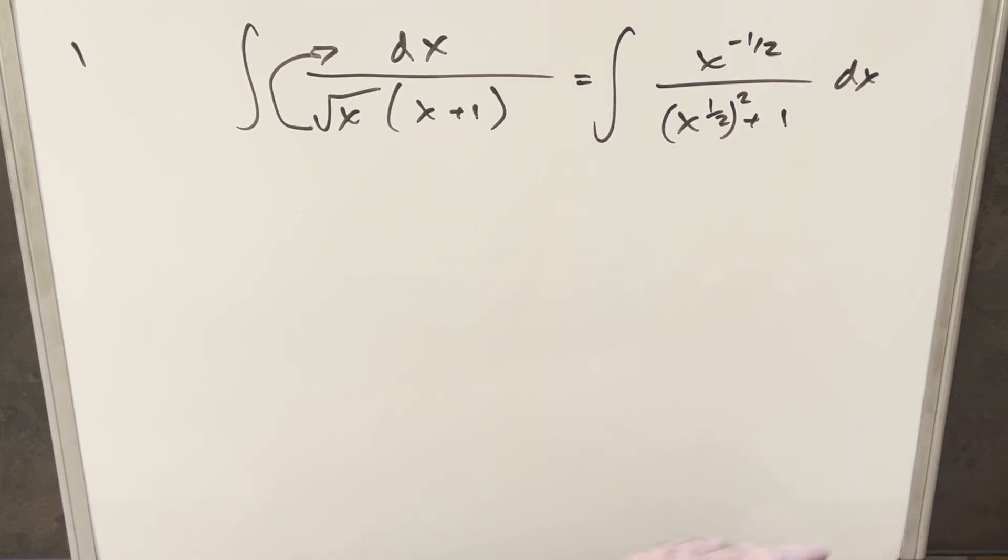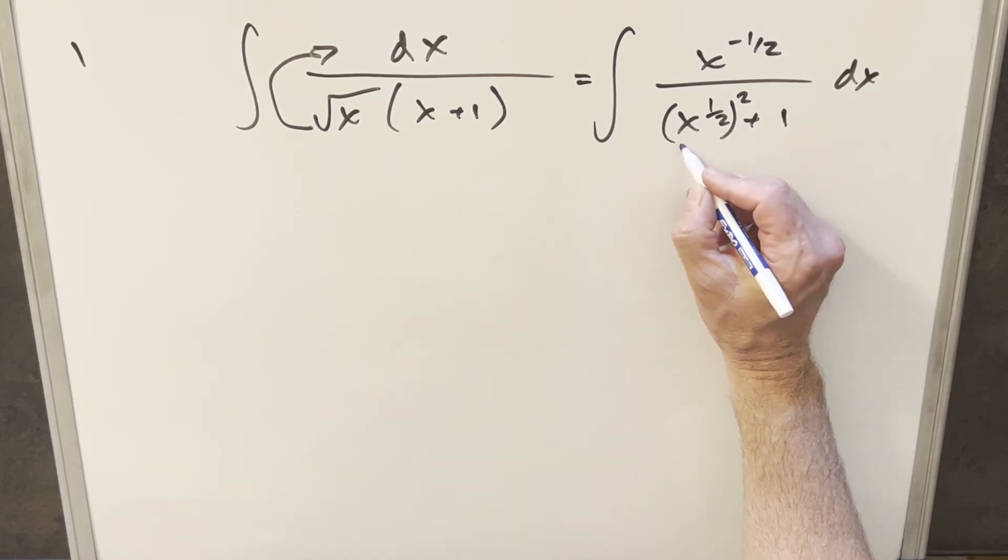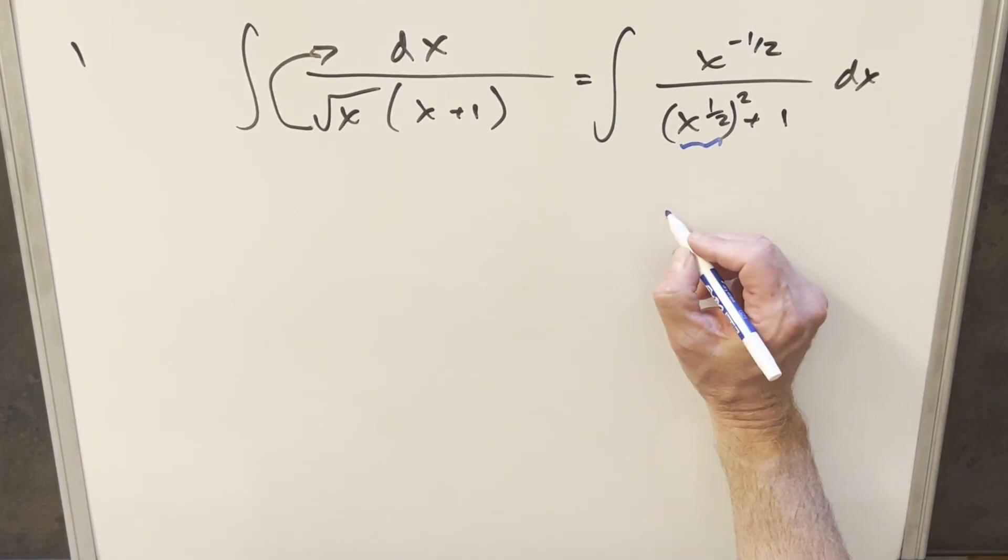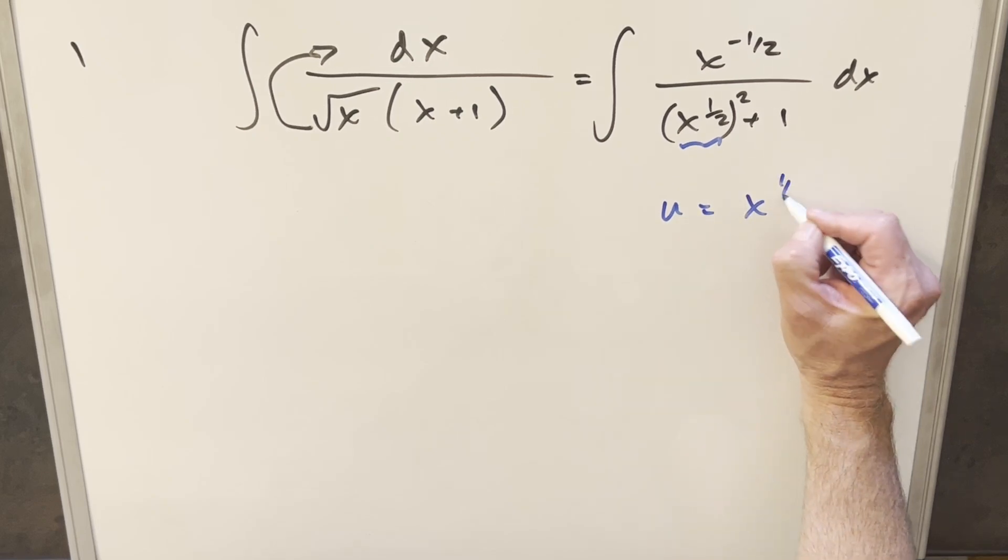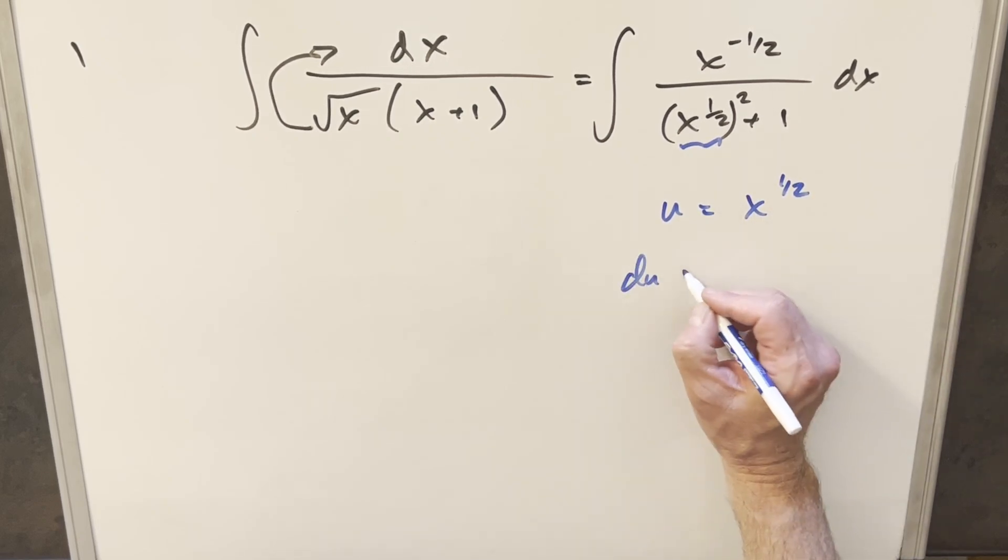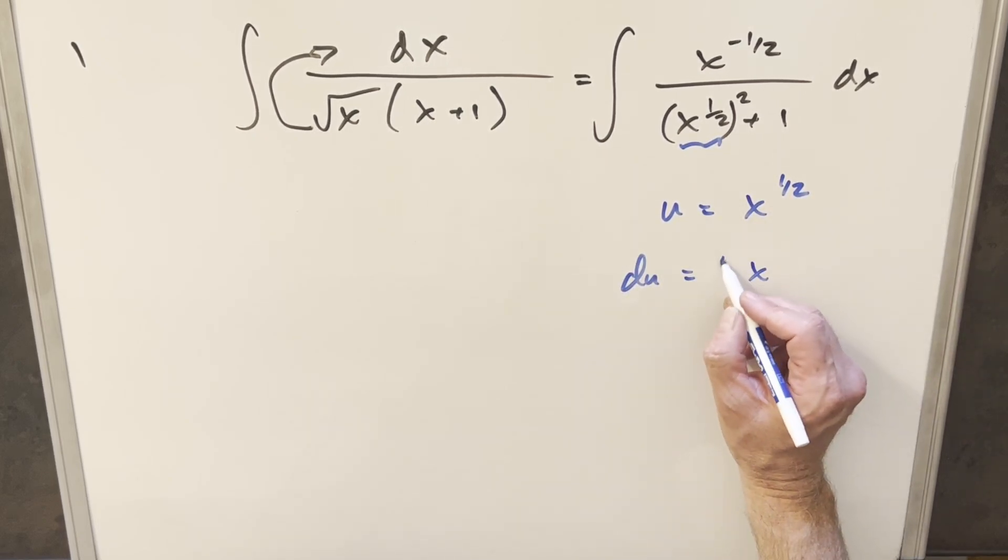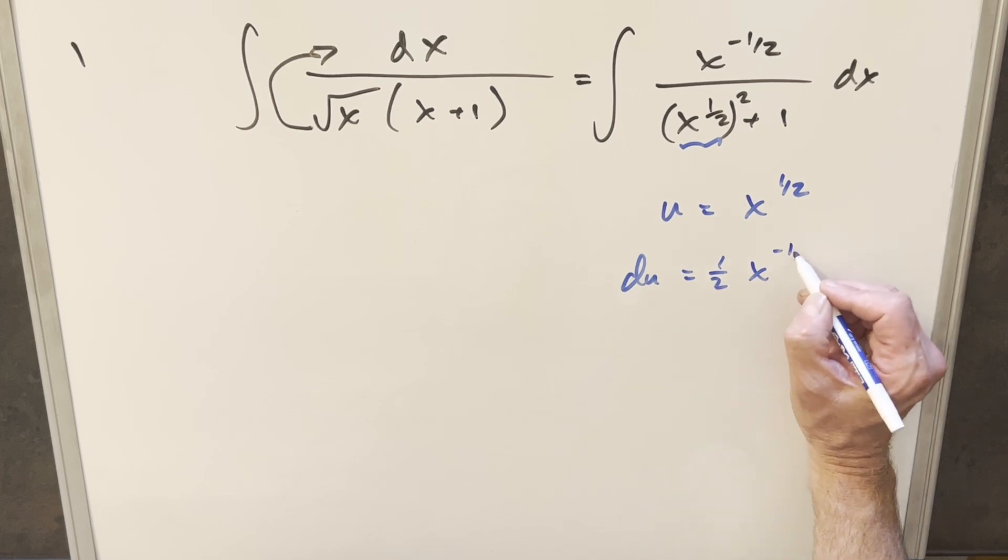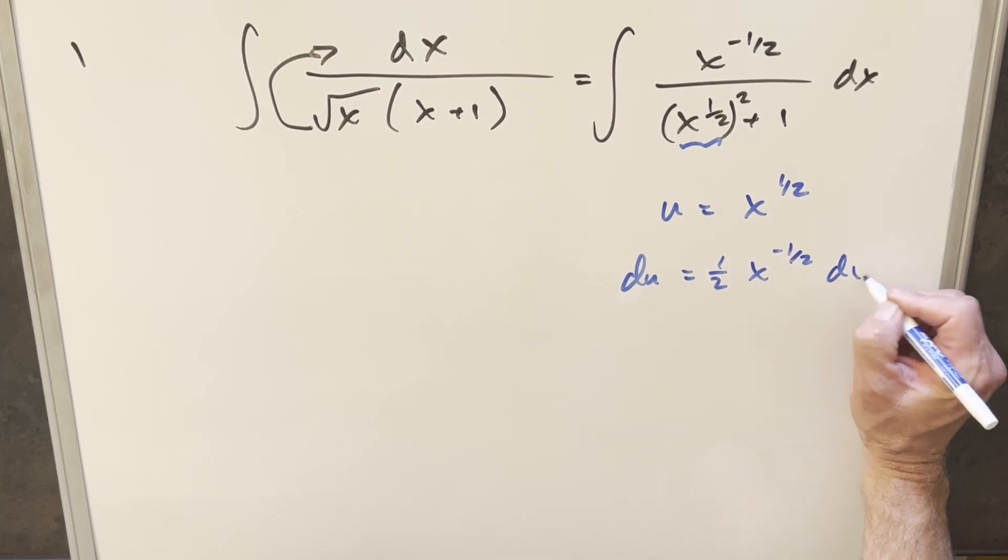So when I do this, I think what I'll do is I'll make my u just for this. So I'll say u, we'll set u equal to x to the one half, take a derivative, du is going to be one half x to the minus one half dx.